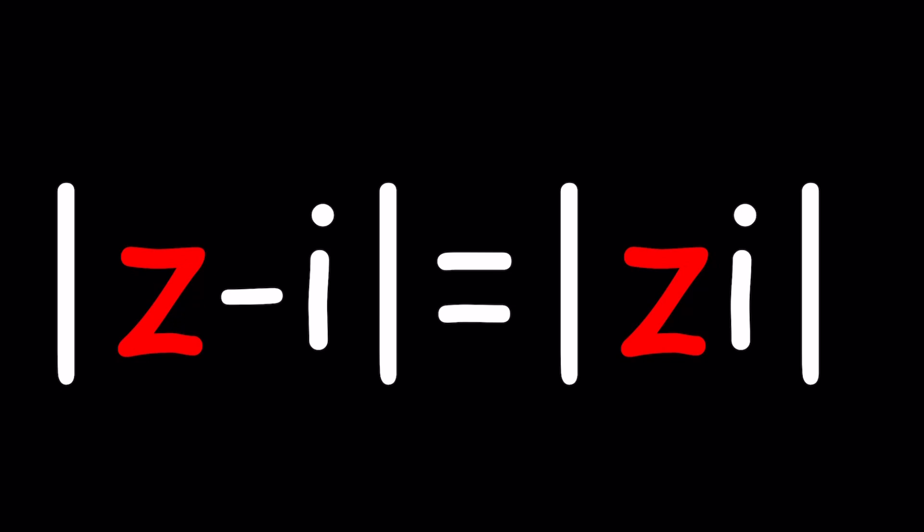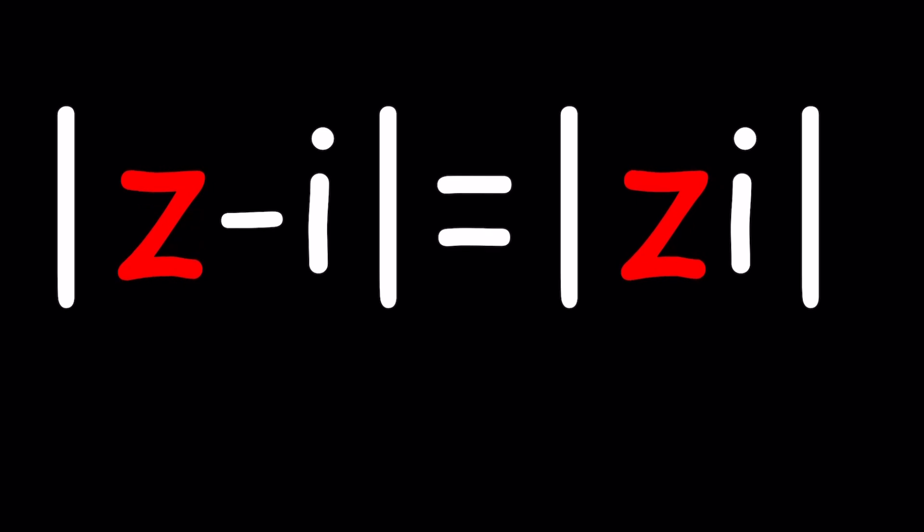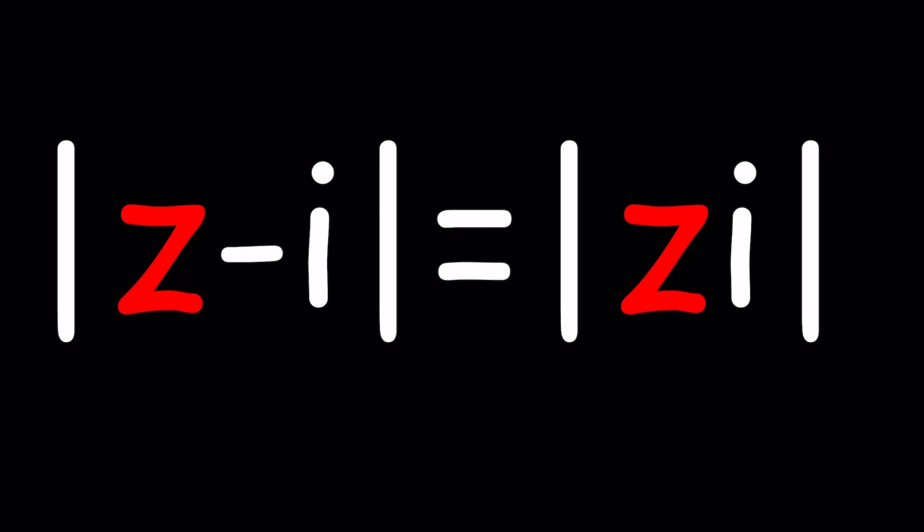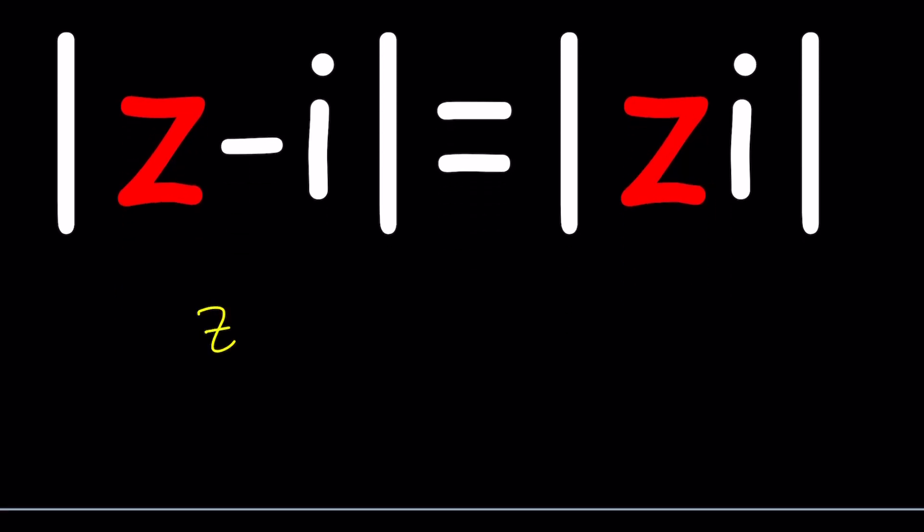We've done some locus problems before. In other words, we're going to try to find the z values, the set of z values that satisfy this type of equation. z is a complex number, and we're going to find z's such that the absolute value of z minus i is the same as the absolute value of zi. Obviously, we've done problems like this before without the absolute value.